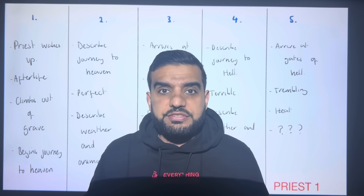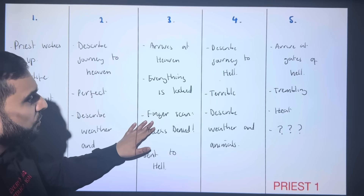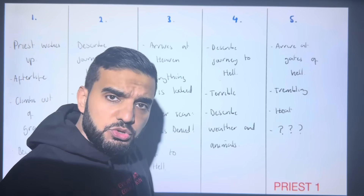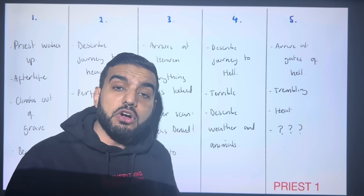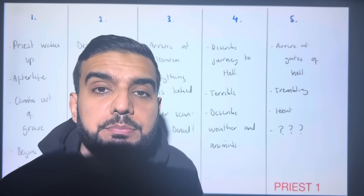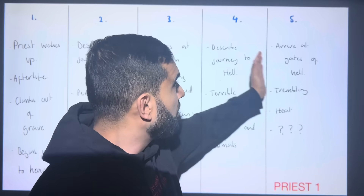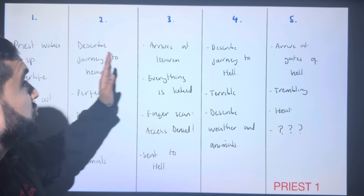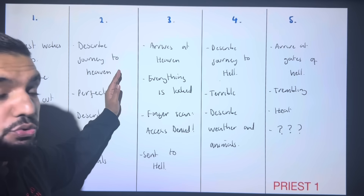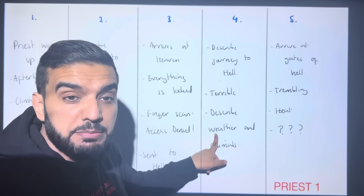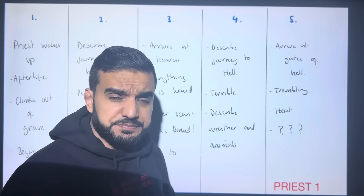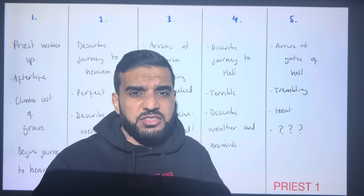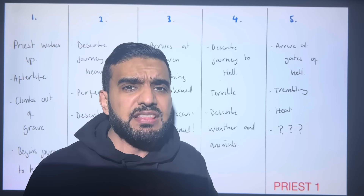You scan your finger on the little machine and it says 'access denied.' You are told that God has not allowed you entry to heaven — you have been sent to hell. In paragraph four, I describe the journey to hell, and this paragraph juxtaposes paragraph two: again I describe the weather and the animals, but this time it's terrible, it's disgusting — the animals are hurting, the weather is painful, everything is nasty.